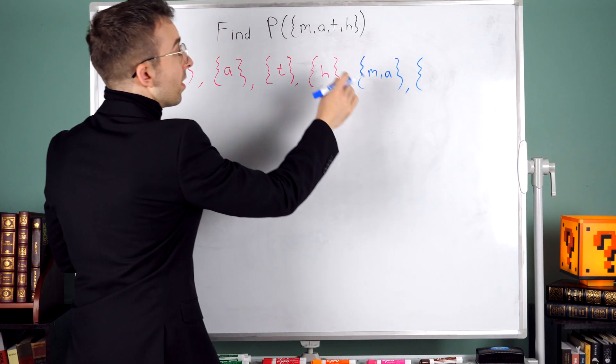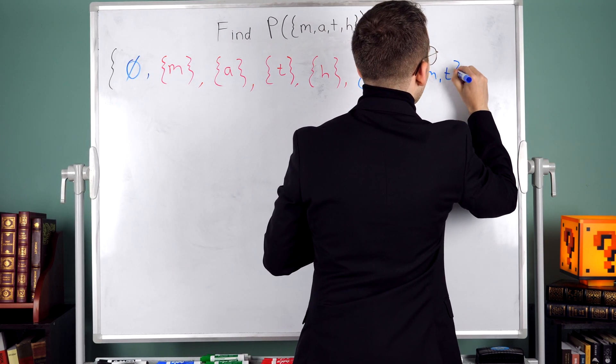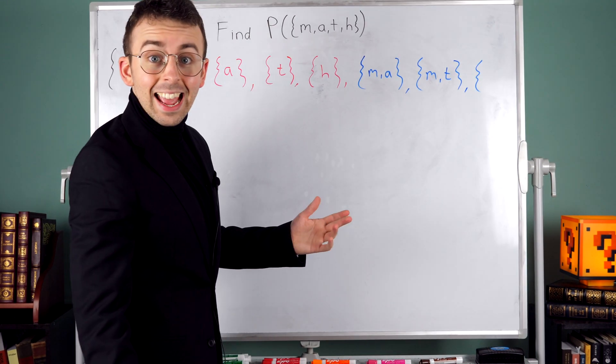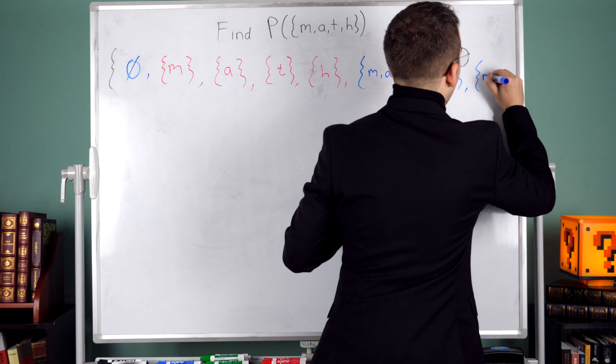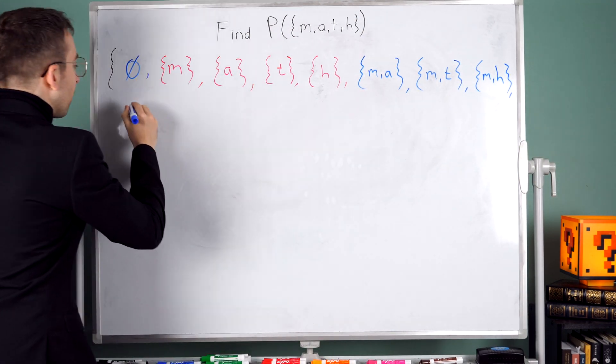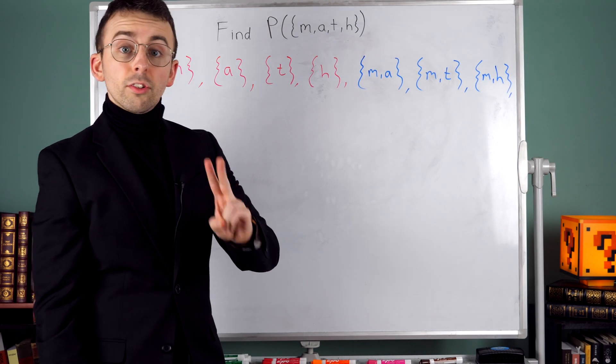We could also have the letters m and t, and I'll put that one next. Or we could have the letters m and h, so I'll put that one next. Now I'm running out of space here, so I'll have to start on this next line. What's the next subset with two elements?